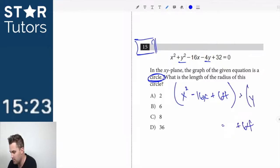Plus y squared minus 4y, divide by 2 and square it, plus 4. So if we add that, we have to add it on this side as well.